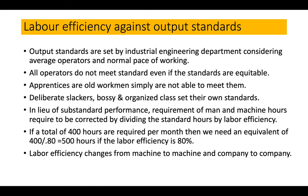Regarding labor efficiency against output standard: output standards are set by the industrial engineering department considering the average operator and normal pace of working. Not all operators meet the standard — apprentices and older workmen may not be able to meet it, and there are deliberate slackers. So the required man and machine hours must be corrected by dividing standard hours by the labor efficiency. For example, if 400 hours are required per month, we need 400 divided by 80% = 500 hours, assuming 80% labor efficiency.